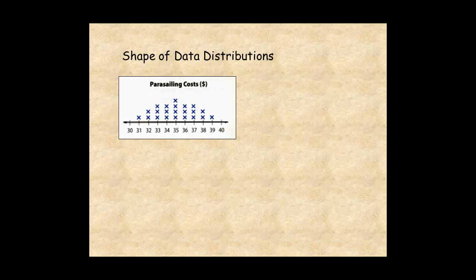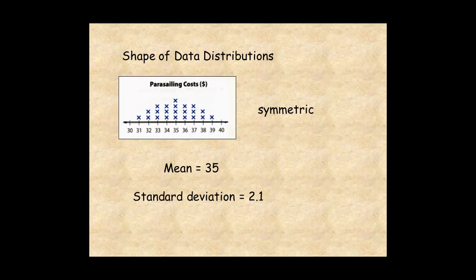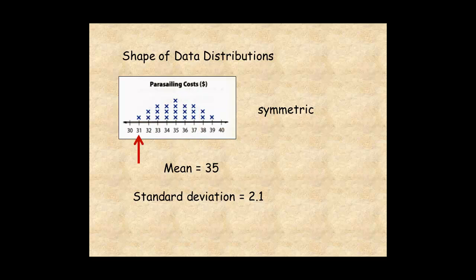This line plot shows the cost of parasailing rides. Since the data are symmetric, you're probably not going to talk about clusters, gaps, and peaks. Instead, calculate the mean and standard deviation to describe the center and spread of the data. So the data are centered around $35. And since the standard deviation is approximately equal to 2, most of the data are spread between $33 and $37. So most customers spend between $33 and $37. The least costly ride is $31 and the most costly is $39.